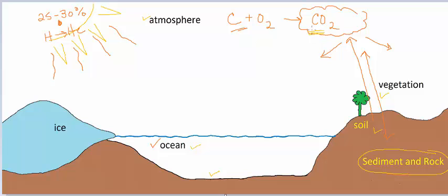The natural input of CO2 into the atmosphere from the rock reservoir is related to plate tectonics and volcanic degassing.